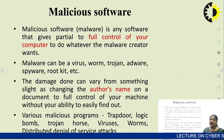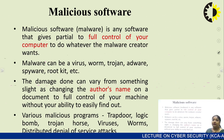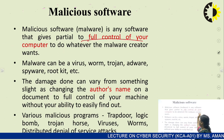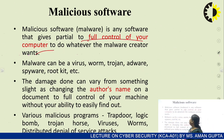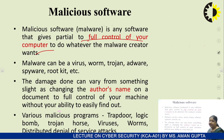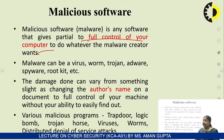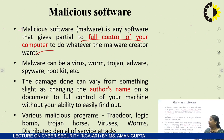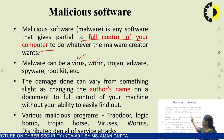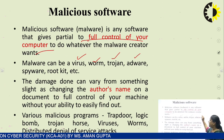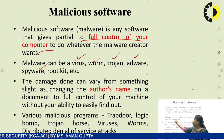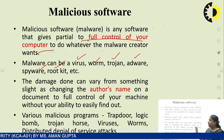Next is malicious software. Malware is any software that gives partial to full control of your computer to do whatever the malware creator wants. Malicious software can be a virus, a worm, a Trojan horse, adware, spyware, rootkit, or anything else.